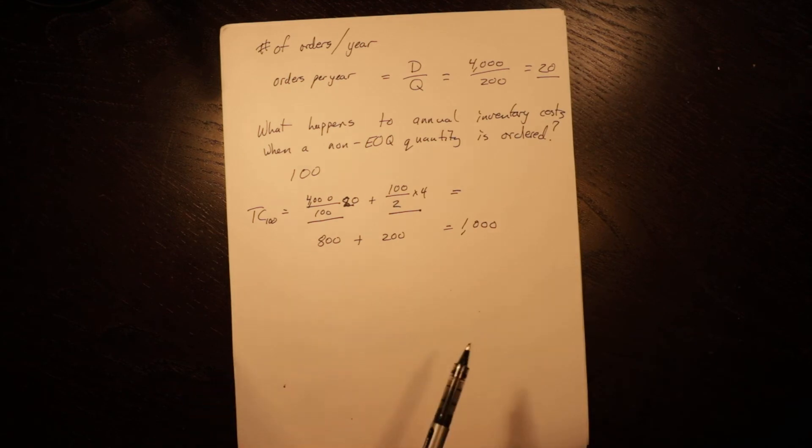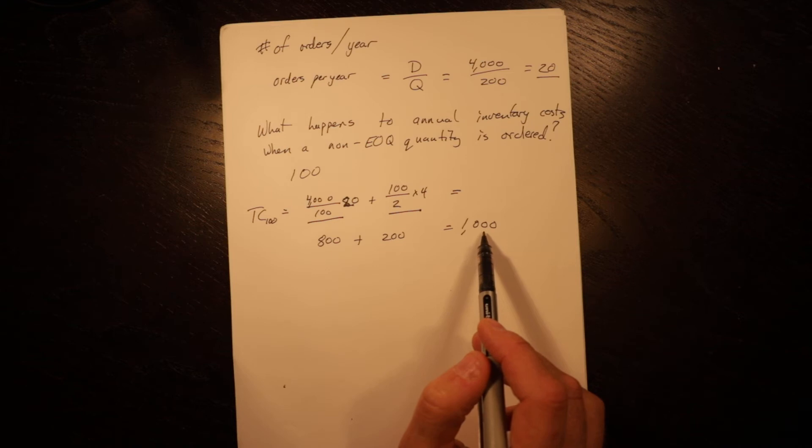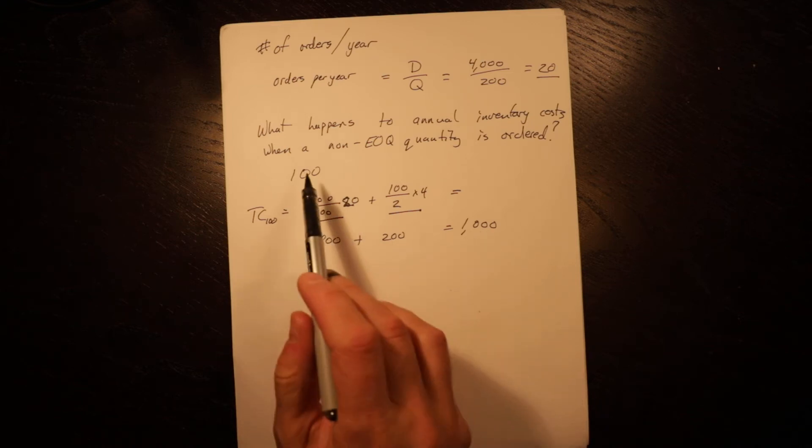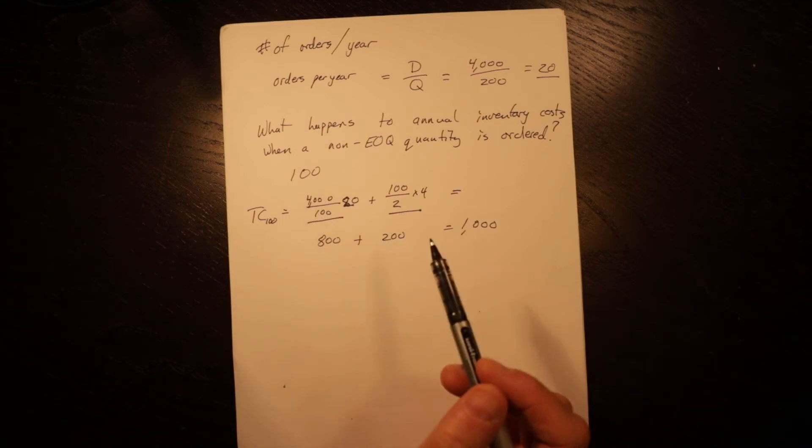This equals 800 plus 200 equals 1,000. You can see that because we're not at the EOQ, our total inventory costs have gone up. Because we're below the EOQ, our setup costs have gone up faster than our holding costs have gone down.